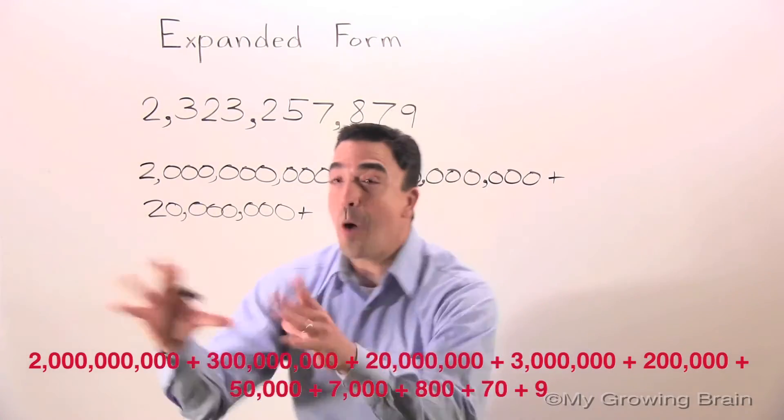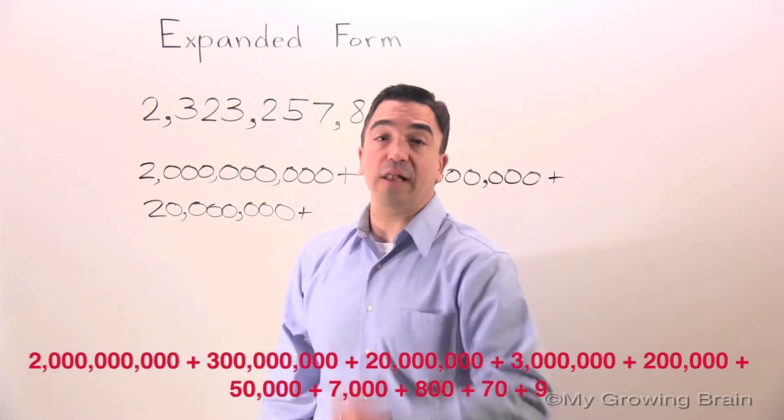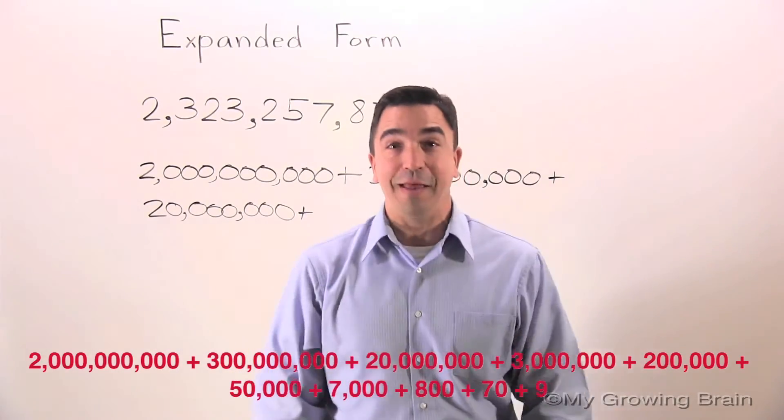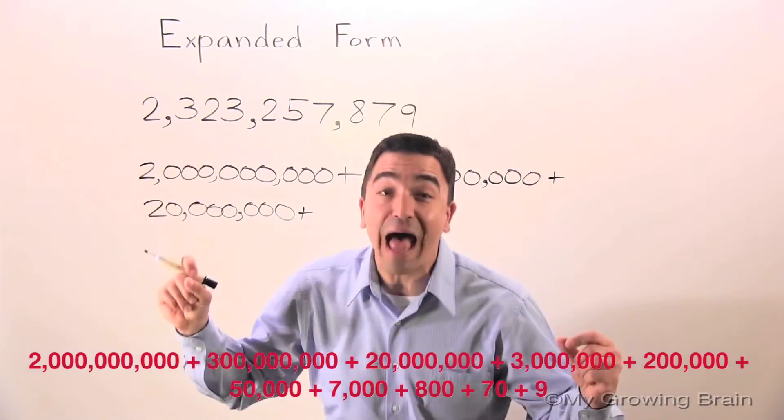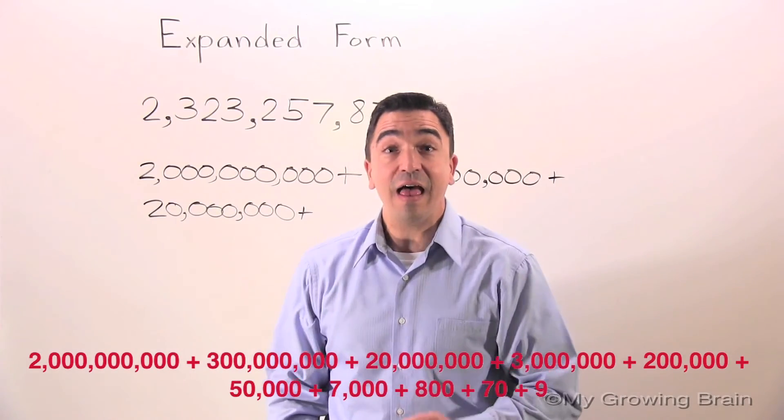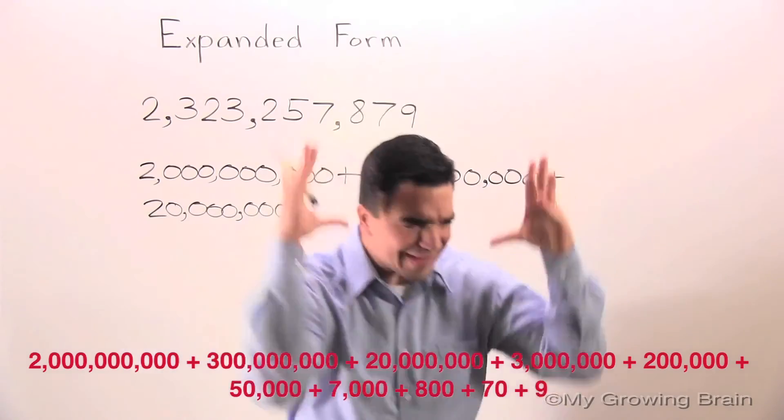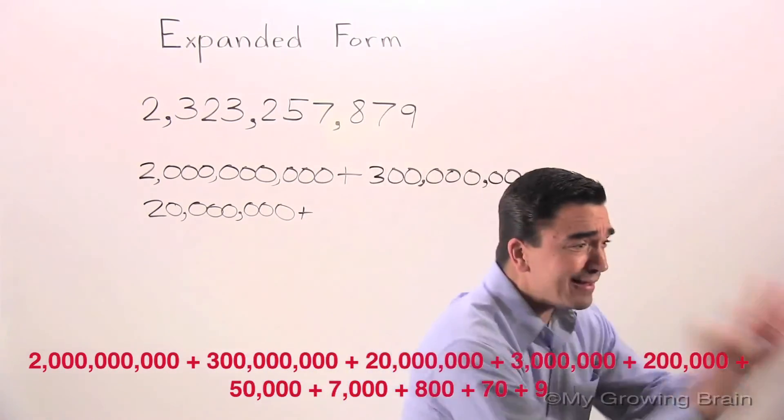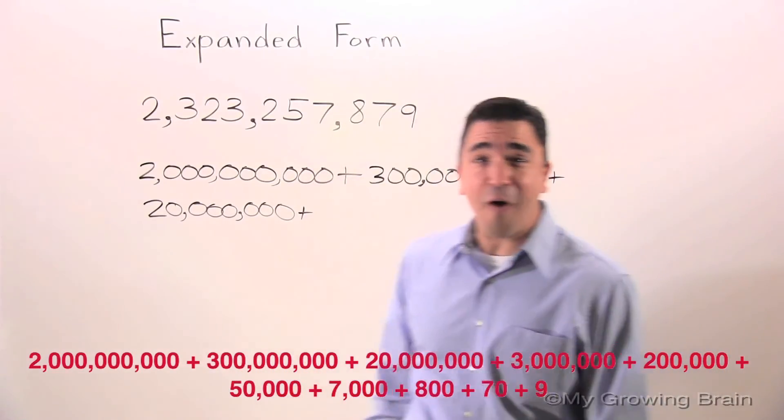Are you ready? 2 billion plus 300 million plus 20 million plus 3 million plus 200,000 plus 50,000 plus 7,000 plus 800 plus 70 plus 9. That concludes our lesson on Expanded Form.